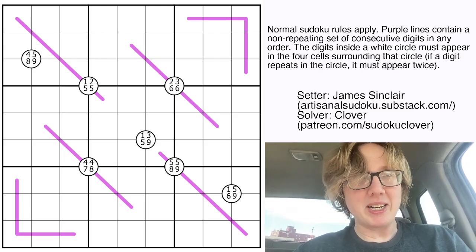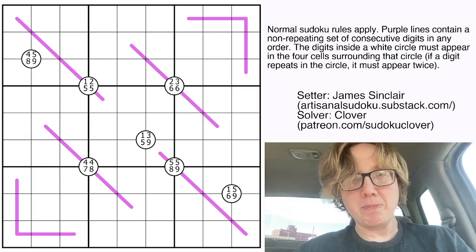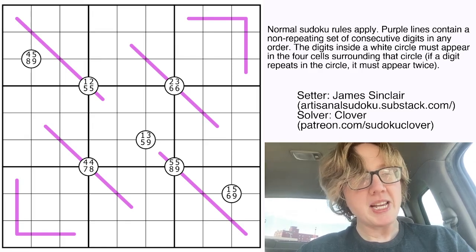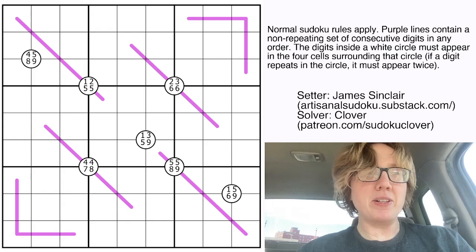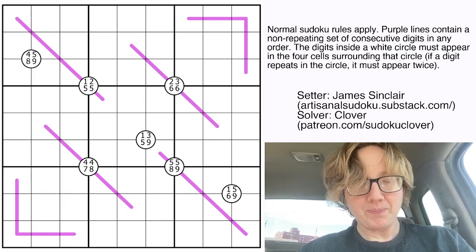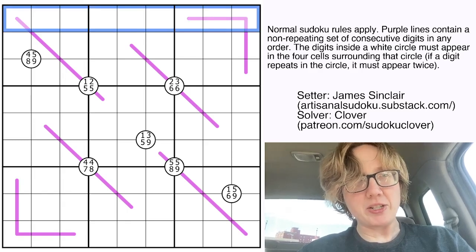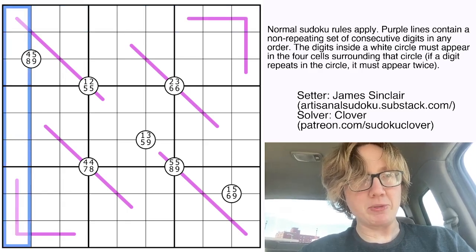So today we've got, from James, a puzzle called Mariner. This was originally posted on May 18th, 2024. And the rules are as follows. So we have normal Sudoku rules. We're placing the digits 1 through 9, once each in each row, each column, and each outlined 3x3 region.